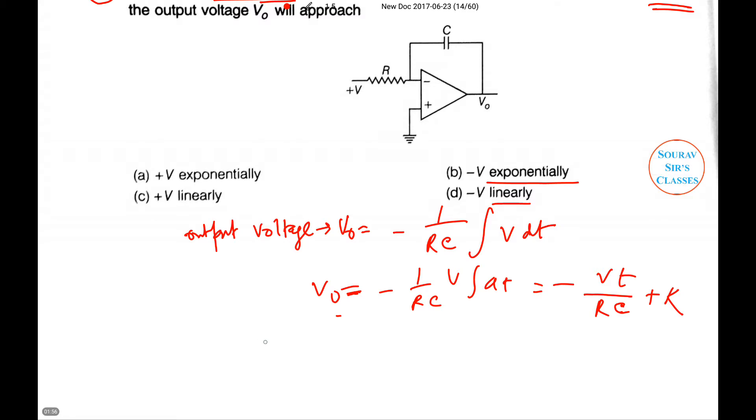V0 varies linearly, so options (a) and (b) are wrong answers. There's a negative sign from the formula itself, so option (c) is also wrong. The correct answer is (d): -V linearly.